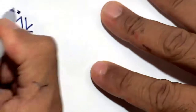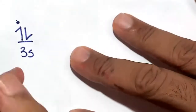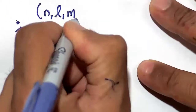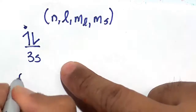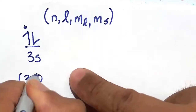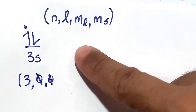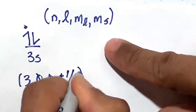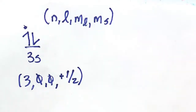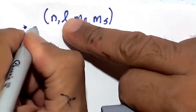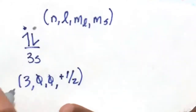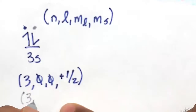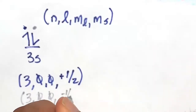The address of this electron is given by n, l, m sub l, and m sub s. So n is going to be 3. l for the s orbital is 0. m sub l, because there's no other slot, is also 0. The first electron is spin up, so m sub s is plus 1 half. For the second electron in the 3s orbital, everything is the same except it's spin down, so m sub s is minus 1 half.